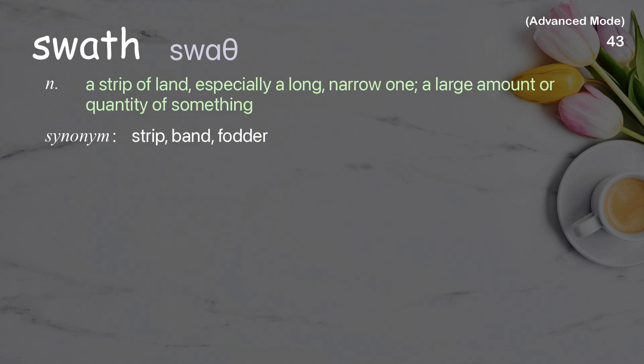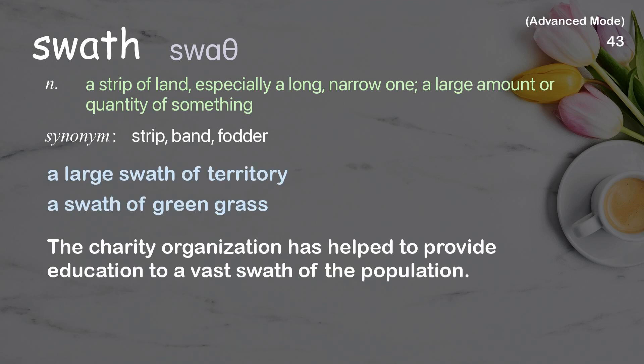Swath: a strip of land, especially a long, narrow one; a large amount or quantity of something. Examples: a large swath of territory, a swath of green grass. The charity organization has helped to provide education to a vast swath of the population.